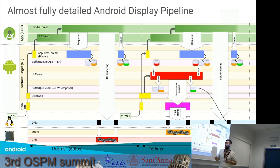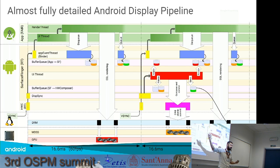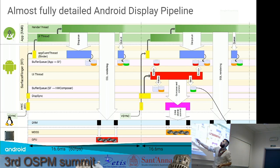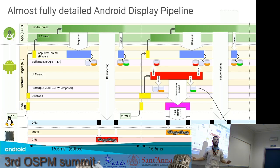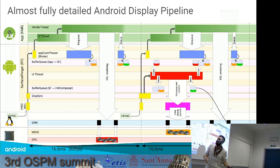Once the tree has been traversed — only the invalidated paths — the UI Thread sends the redraw list to the render thread. It then continues execution performing cleanups of data structures and other less critical operations.